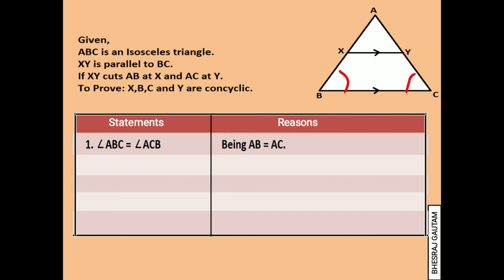As X, Y is given parallel to BC, these two angles, angle ABC and angle BXY are co-interior angles and the property of co-interior angles is, their sum is exactly 180 degrees.